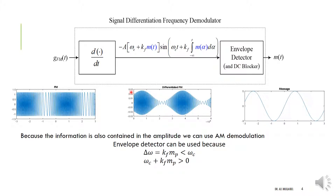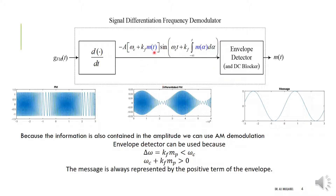Envelope detection requires that the added DC component be much greater than the message itself. The term representing the message — kf·m(t) — is usually much smaller than the carrier frequency ωc. This guarantees the message always stays on the positive side, which is the condition for applying envelope detection. Since ωc plus kf·mp (the peak of the message) is always a positive quantity, envelope detection can be applied and the message stays on the positive side of the carrier.